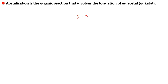An acetyl looks something like this. It is a geminal diether. There is a hydrogen attached to the carbon, and one of the other groups on the carbon could be an alkyl or aryl group, or it could even be an H, and there are two ether groups on that same carbon. It's a geminal diether. If it has at least one H on the carbon, we call it an acetyl.